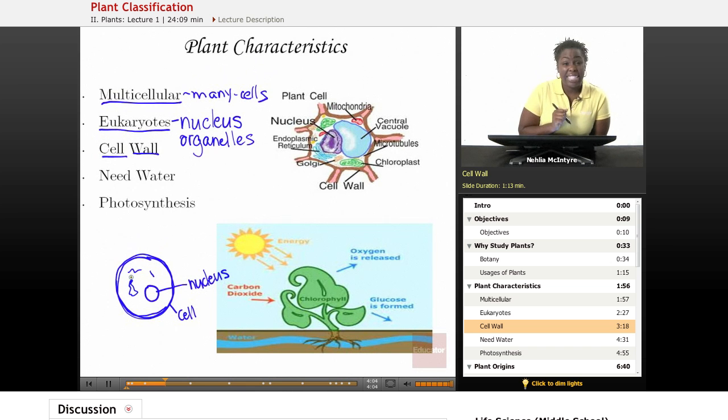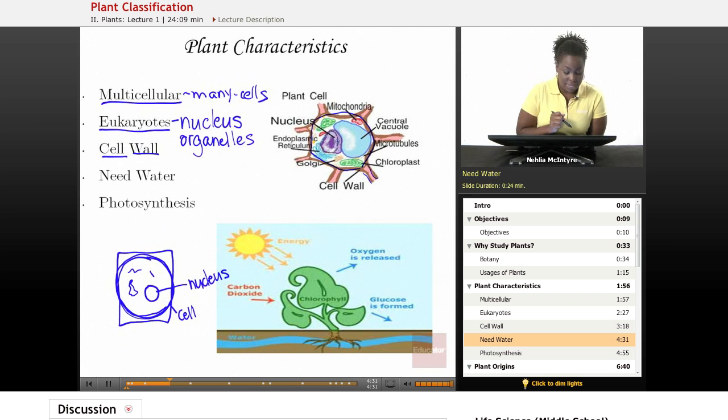Now, the plant cell is different from the animal cell because it has this very rigid cell wall. As you can see here in this picture, the cell wall is outside of the organelles and the nucleus of the cell. That cell wall is important because it helps the plant to retain water and it helps that plant to keep certain nutrients inside.